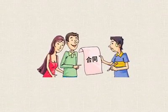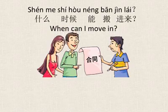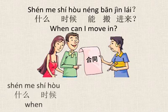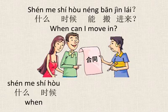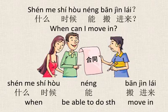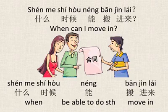When can I move in? This is how you say it: 什么时候能搬进来? 什么时候 is 'when'. 能 means 'be able to do something'. 搬进来 means 'to move in'. 什么时候能搬进来? — When can I move in?